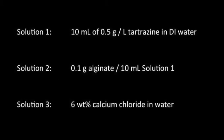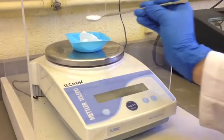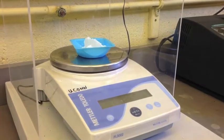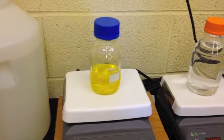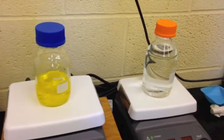First, the solutions shown were prepared to be used in the production of hydrogel beads. All solid components were measured out in a weigh boat and poured into a 500-milliliter bottle with their respective solvents. The solutions were placed on a stir plate and left to mix over the next couple days.